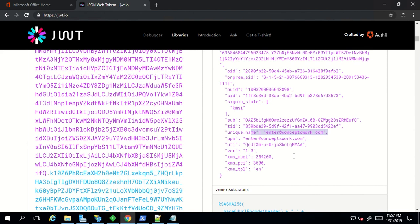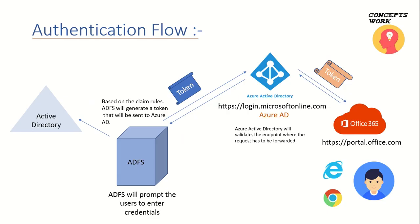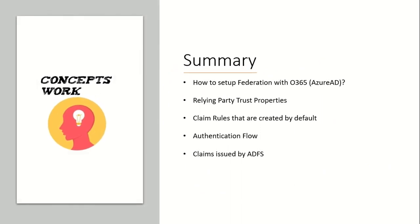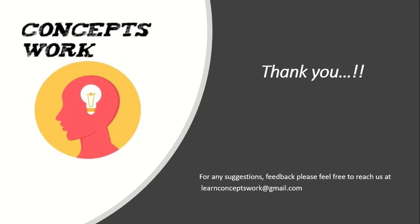This was all about how the authentication process works with ADFS and login.microsoftonline.com. Quick summary: we've covered how to set up federation with Office 365, the relying party trust property and the identifier tab, the claim rules created by default, the authentication flow, and with the help of the Fiddler trace we've checked the claims issued by ADFS to login.microsoftonline.com. If you've learned something new, please subscribe and comment below. Try doing what I've shown in your lab. If you have any questions feel free to reach me at learnconceptswork@gmail.com. Thank you so much, have a great day, bye!